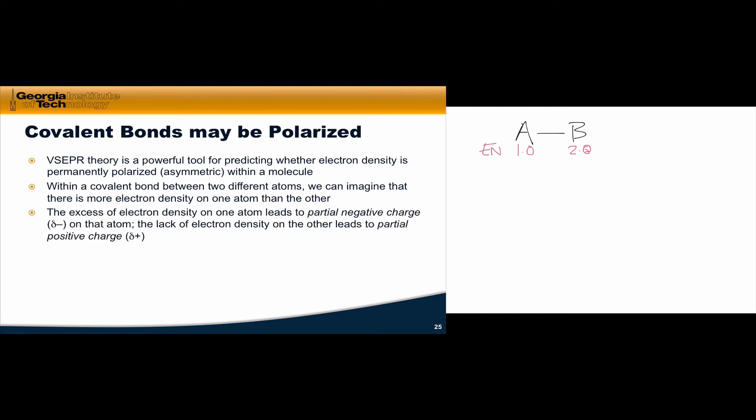This excess of electron density on B leads to a partial negative charge on B, which we can represent using this delta minus symbol. You'll see this a lot to represent partial negative charge, a negative charge between 0 and 1. The lack of density on A leads to a partial positive charge, again, positive charge with the magnitude between 0 and 1.